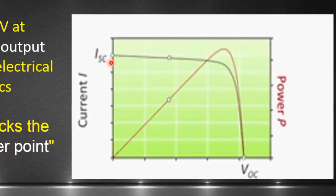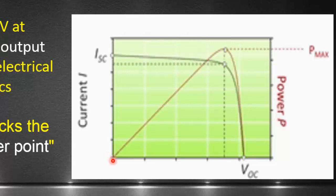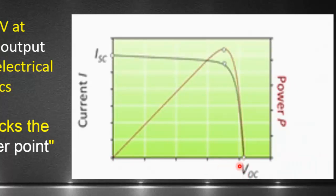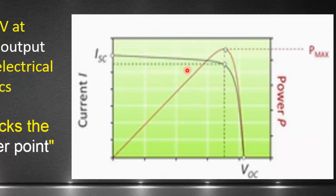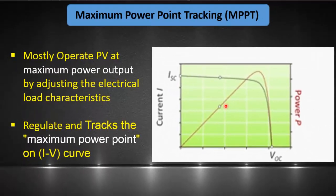The first point is ISC, short circuit current, where current is maximum and voltage is zero. Another point is VOC, open circuit voltage, where voltage is maximum and current is zero. Between these two points, output current and voltage vary, and MPPT calculates the power at each point and then adjusts output voltage and output current to match with input power.